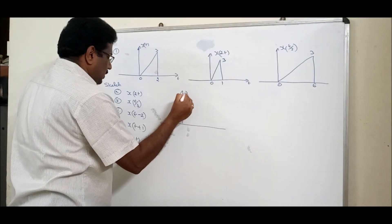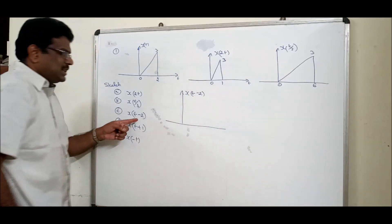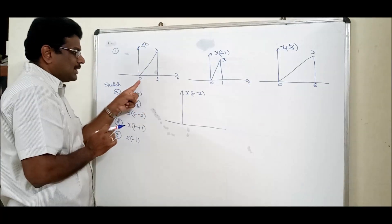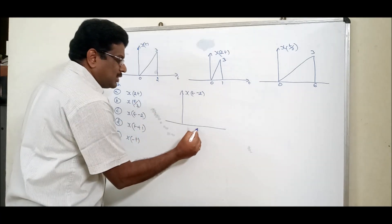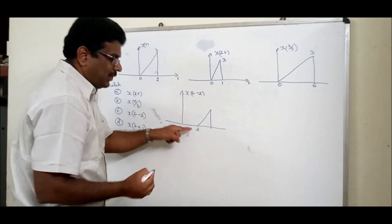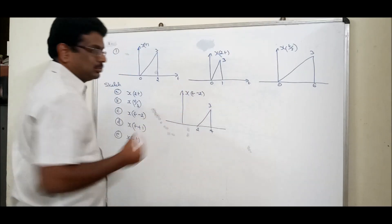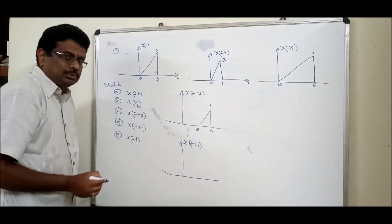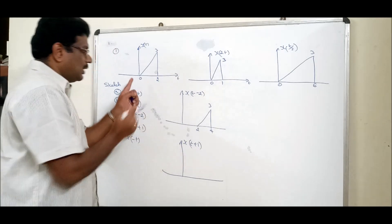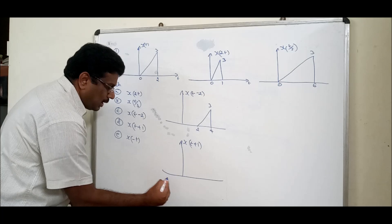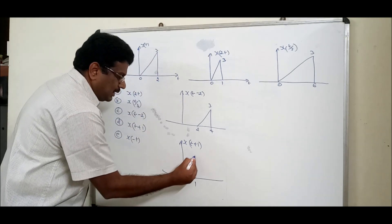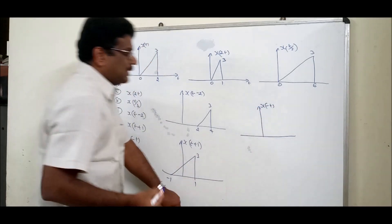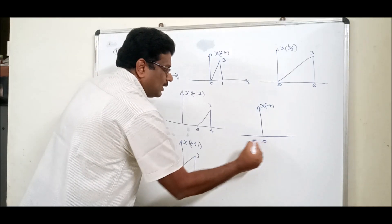Next, x(t − 2): t minus t₀ is a right shift by 2 values. The signal starts at 0, so right shift by 2 means it will start at 2, and 2 will go to 4. For x(t + 1): this is a left shift by 1 value — 0 pushes to −1 and 2 pushes to 1. Finally, x(−t) is a reflection — the signal which was from 0 to 2 now goes from 0 to −2.